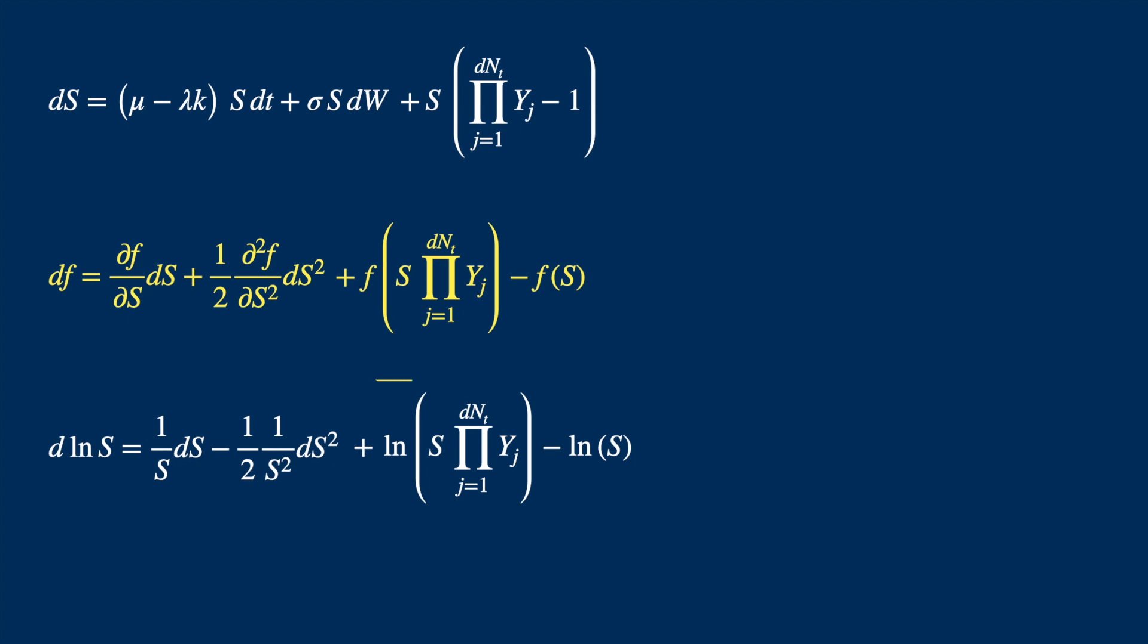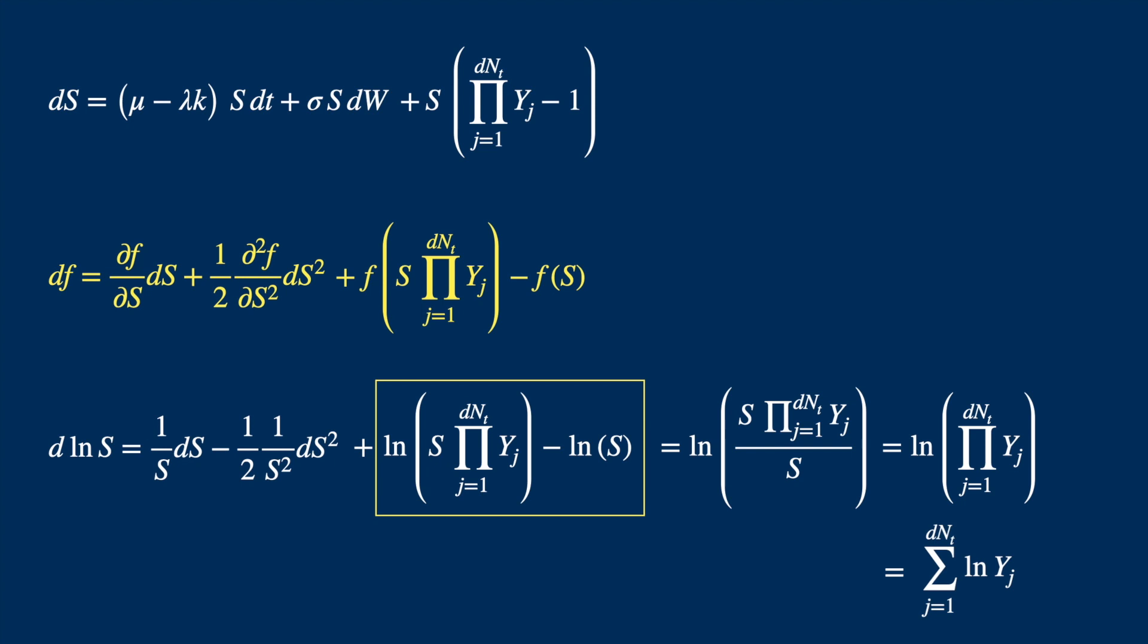And then in the jump part we just replace the function f by log of S. Let's focus on the jump part for a bit. Log of a minus log of b is equal to log of a divided by b. The S is cancelled. And then log of product is equal to sum of logs. So we can replace the jump part by this simple sum.